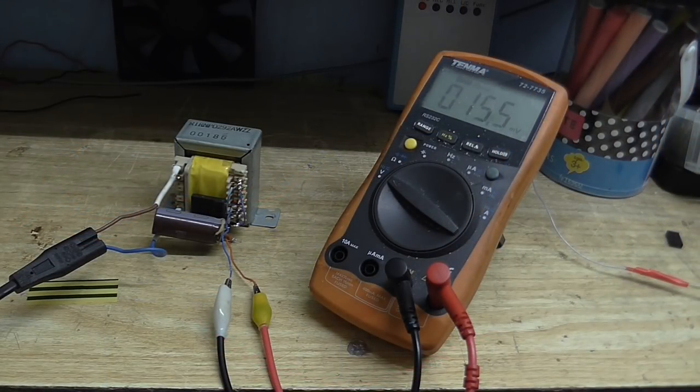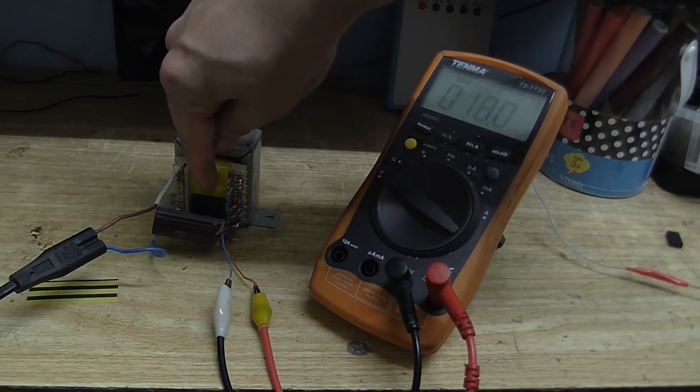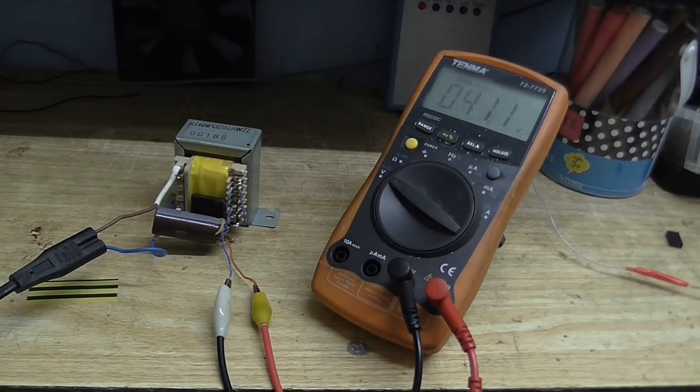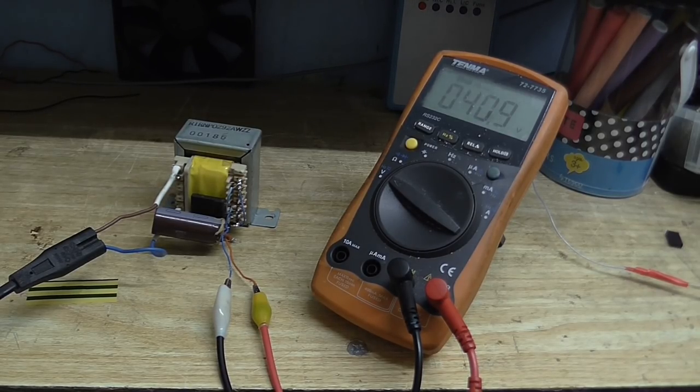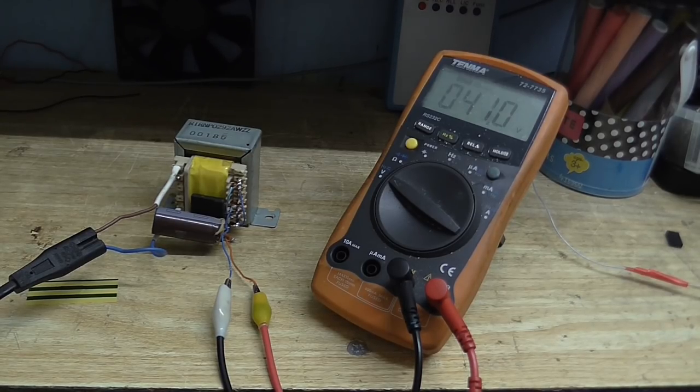Well, after rummaging through my box of transformers, I finally found one that I think will do the job. So, I attached the full bridge rectifier and a smoothing capacitor. And this is giving us the 40-odd volts that I need. So, that's the transformer I'm going to use. So, I think the next thing to do is hook up the current limit circuit and the light and let's see how well this performs.